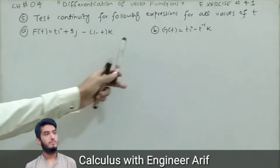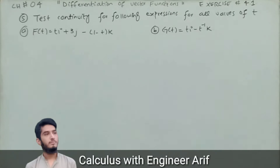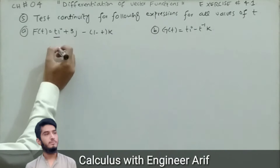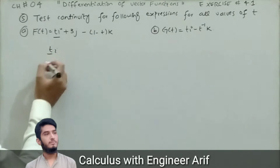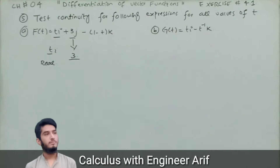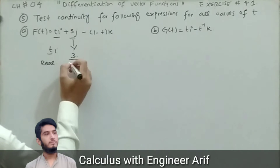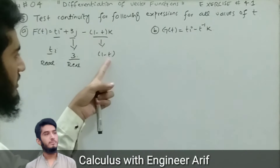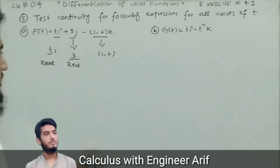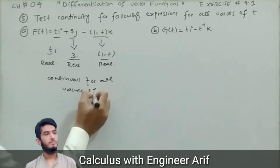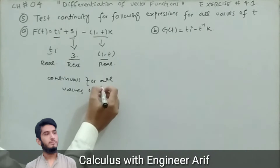Let's move toward question number five: test the continuity for the following expressions for all values of t. Part a: f(t) = ti + 3j - (1-t)k. Here ti is defined for each and every real number, so the domain is all real numbers. The constant 3 is also defined from negative infinity to positive infinity, and (1-t) is also continuous. So the whole function is continuous for all real values of t.